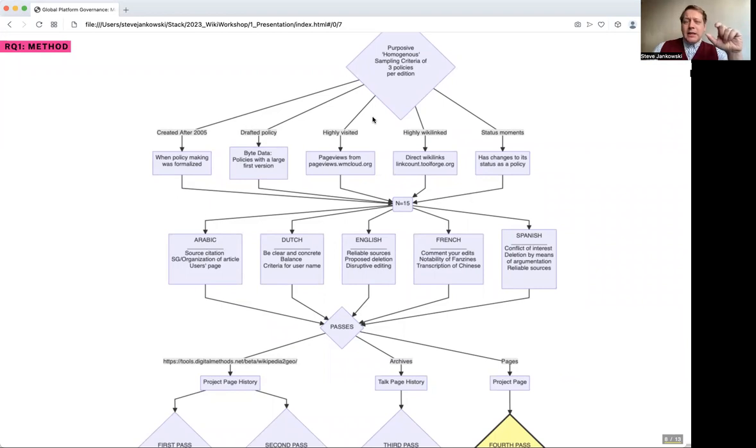We wanted to see examples where there was a policy that had been drafted beforehand. Some cases we were able to find that where it was a full draft before, like in the first edit or first couple of edits. We wanted to be highly visited, so there's plenty of activity, highly wiki-linked, so it's representative of community consensus about its value, and that it also had development moments that we could analyze.